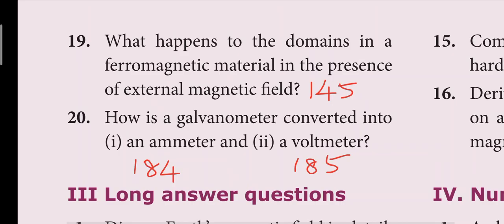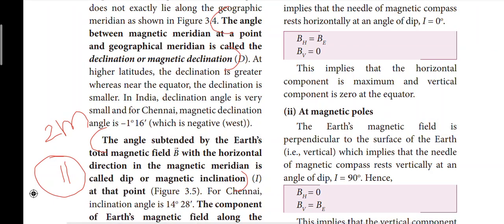Twentieth question: what is a galvanometer, and how is a galvanometer converted to an ammeter and voltmeter — pages 184 and 185. So we will mark the pages; add the question number and mark it in your book accordingly.